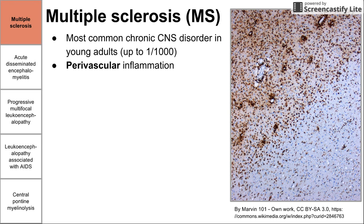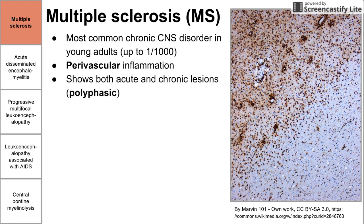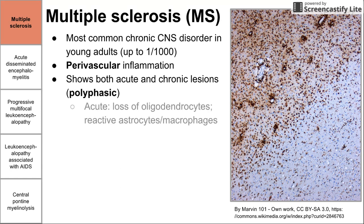MS has perivascular inflammation. On histology, you're going to see inflammation and demyelination around the blood vessels. There are both acute and chronic lesions, and in a given patient with MS, you might see both at the same time. MS has been described as polyphasic. The acute lesions involve loss of the oligodendrocytes and loss of the myelin, with reactive astrocytes and macrophages infiltrating the area around the missing myelin.